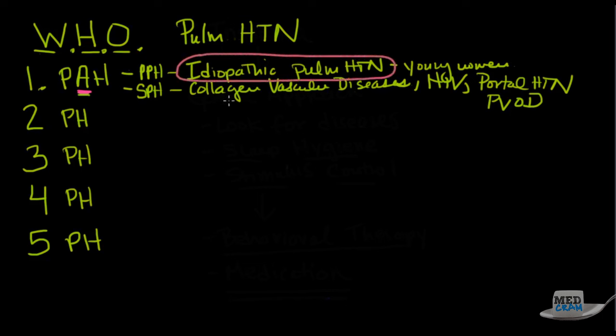The reason why I include all of these is because the medicines that we're going to talk about really are for group one. There is another one that fits into group four, which we'll talk about. Generally speaking, the new medications and even the old medications that we have for pulmonary hypertension really are for this type.